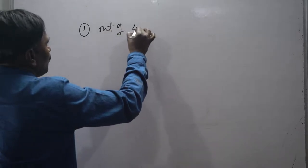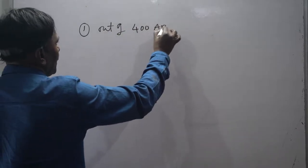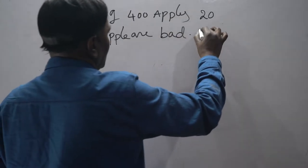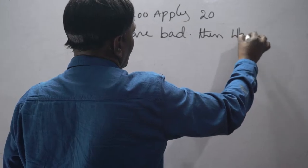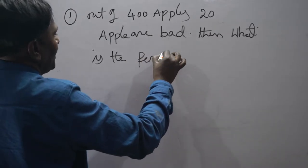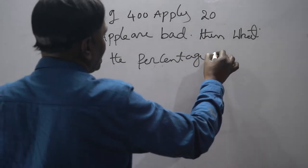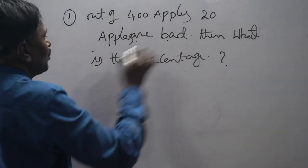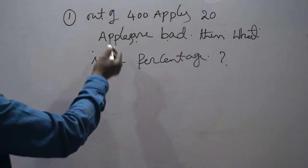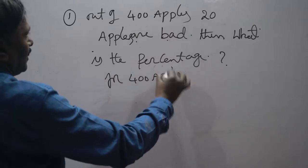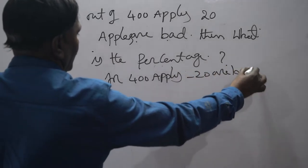Out of 400 apples, 20 apples are bad. Then what is the percentage? What is the percentage? So out of 400 apples, 20 apples are bad. Then what is the percentage? So it is very simple. For 400 apples, 20 are bad.